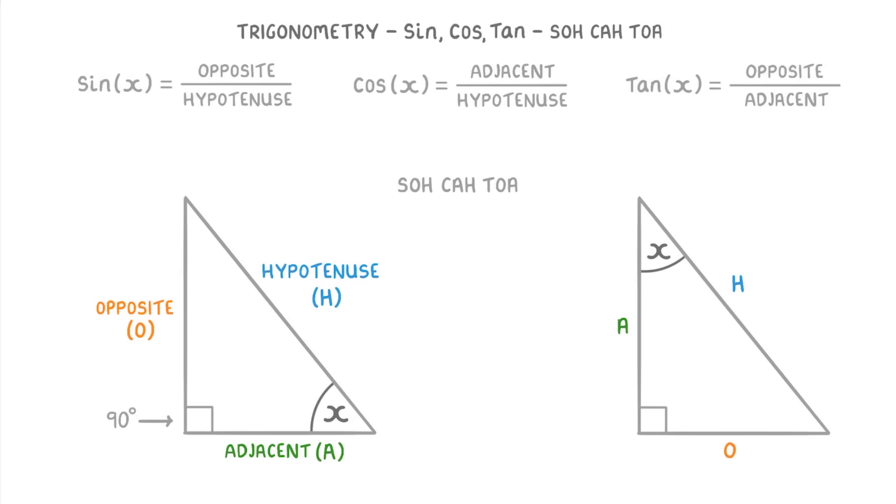For example, if we look at SOH, the S stands for sine X, the O stands for opposite, and the H stands for hypotenuse, so we know that sine X equals opposite over hypotenuse. Meanwhile for CAH, the C stands for cos or cosine X, the A stands for adjacent, and H stands for hypotenuse.